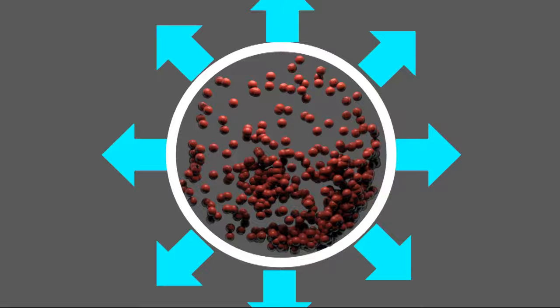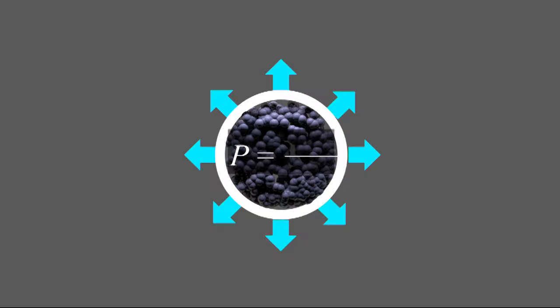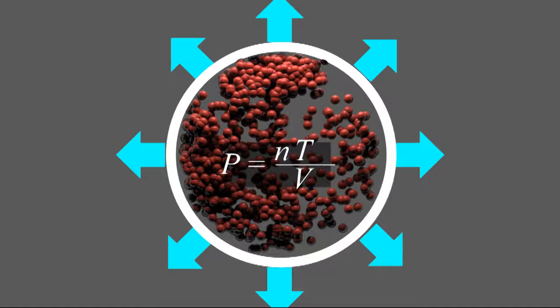The pressure P equals the number of particles N times temperature T divided by the volume V times a constant R. This is called the ideal gas law.